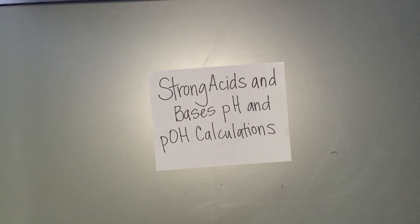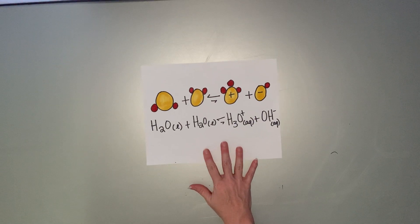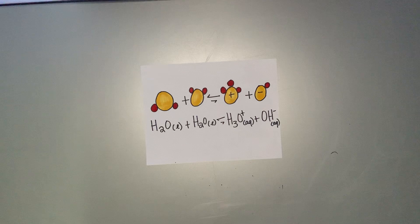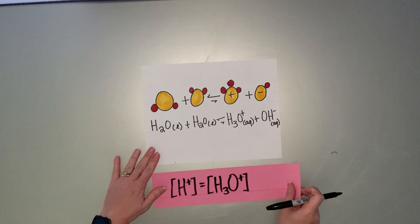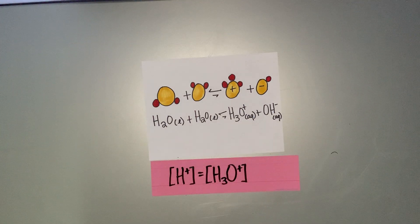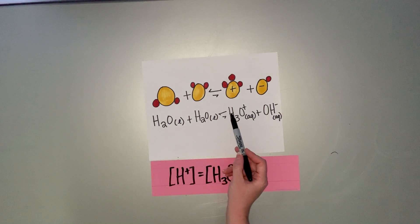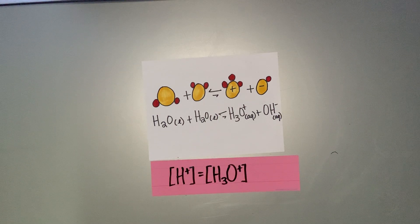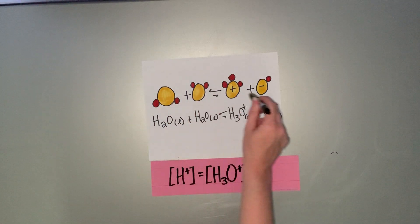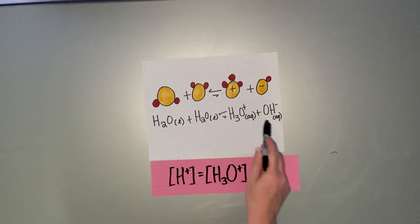I'm going to get started with some review of what Mrs. Wilson spoke about last week in her screencast, specifically the auto-ionization of water. We learned that water is amphoteric, which means it can act as an acid or a base, which means that water auto-ionizes into the hydronium or hydrogen ion and the hydroxide ion. The arrows go both directions, meaning this equation goes back and forth from water molecules to ions and vice versa.